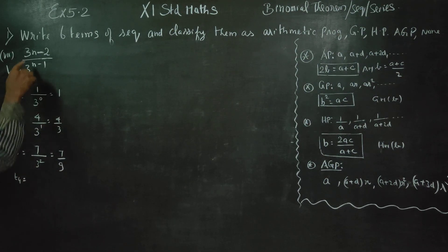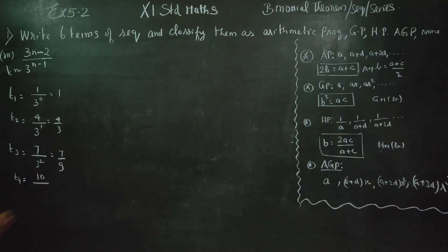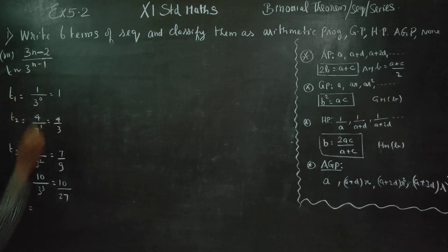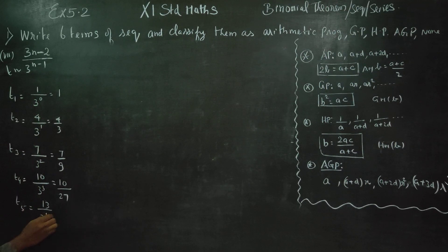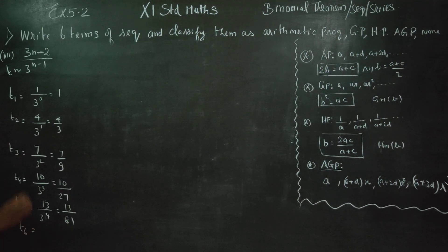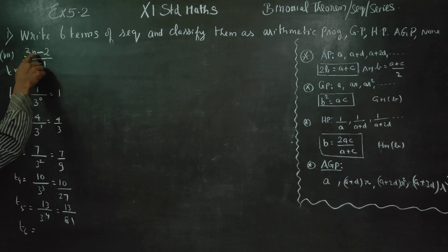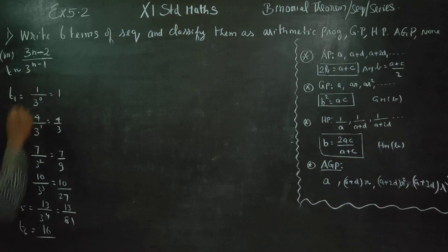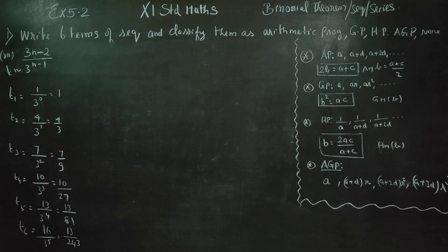For T4: (3×4 - 2) / 3^(4-1) = 10/27. For T5: (3×5 - 2) / 3^(5-1) = 13/3^4 = 13/81. For T6: (3×6 - 2) / 3^(6-1) = 16/3^5 = 16/243.